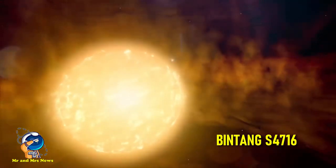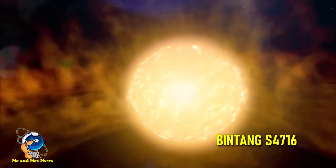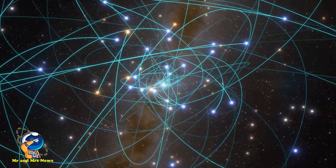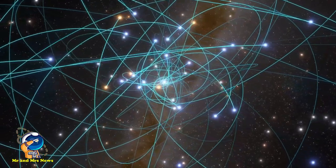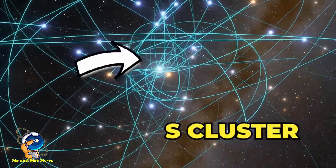Bintang yang diberi nama S4716 ini menyelesaikan orbit di sekitar lubang hitam supermasif Sagittarius A hanya dalam waktu sekitar 4 tahun. Artinya bahwa bintang tersebut bergerak dengan kecepatan yang sangat cepat, yaitu sekitar 29 juta kilometer per jam.